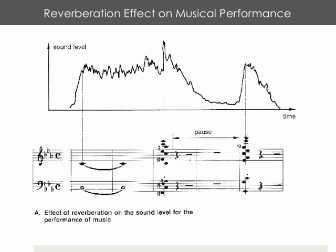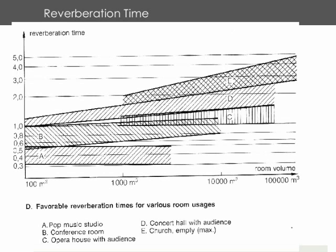This graph gives us a general idea of the favorable reverberation times for various types of rooms and the usages of those zones. So we have pop music, conference rooms, opera houses, and concert halls.